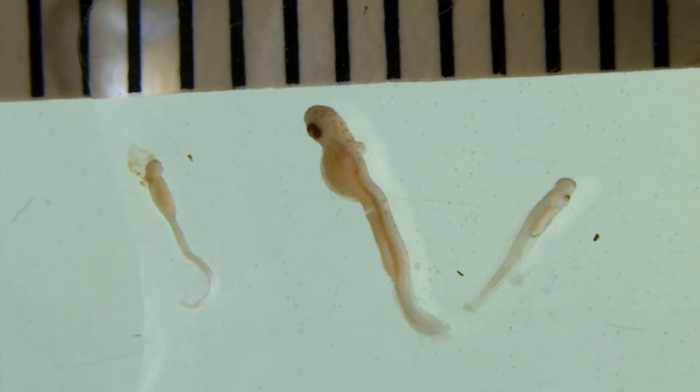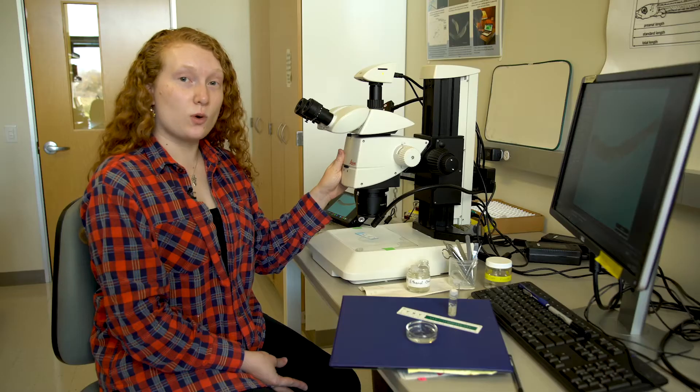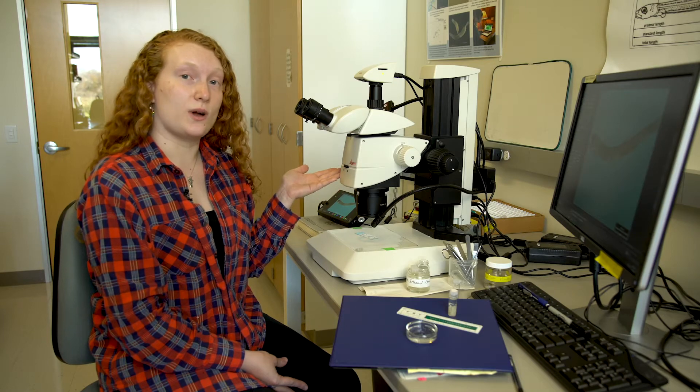So this is our Leica. It's a stereo microscope. It just has much better power to it and higher image quality so that you can see all the details of the fish that you need to see to identify them.